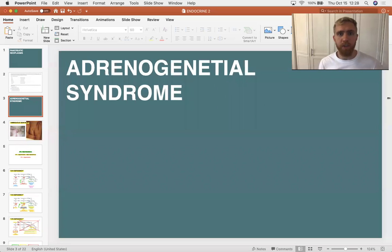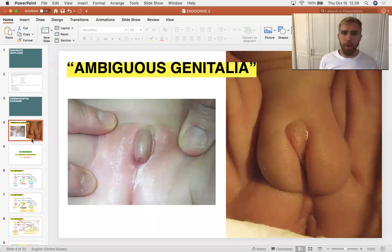Hello, let's discuss adrenogenital syndrome. So you're in the hospital, a baby is delivered, you go in to look at the child, and their genitals look something like this, wherein you can't really tell if you're looking at a guy or a gal. What do you do? How do you go about working that up?